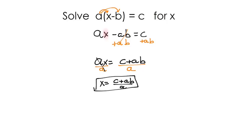That would be a perfectly acceptable answer for me. Some people might want you to take that a step further and write it as two separate fractions. And by doing that, you can see that over here, those A's cancel. And you could have X equals C over A plus B.